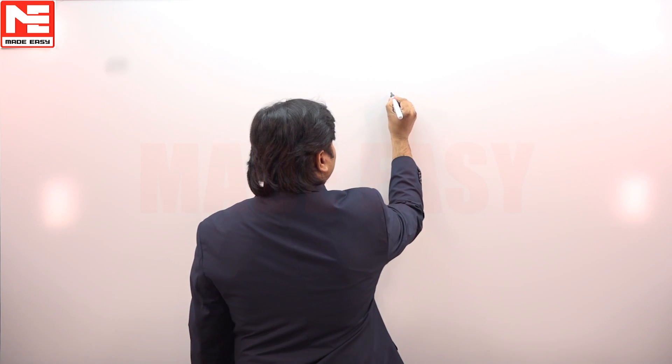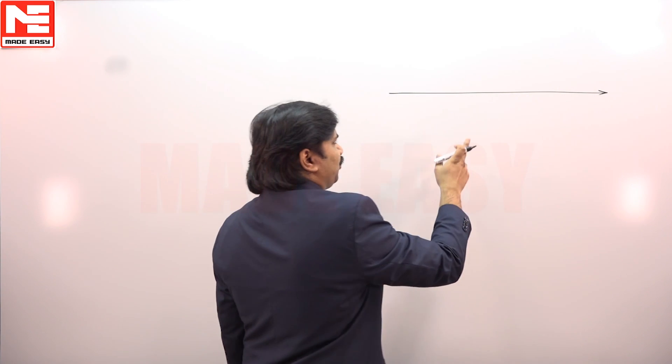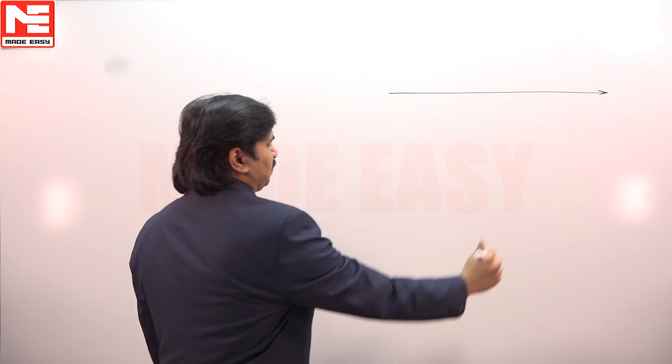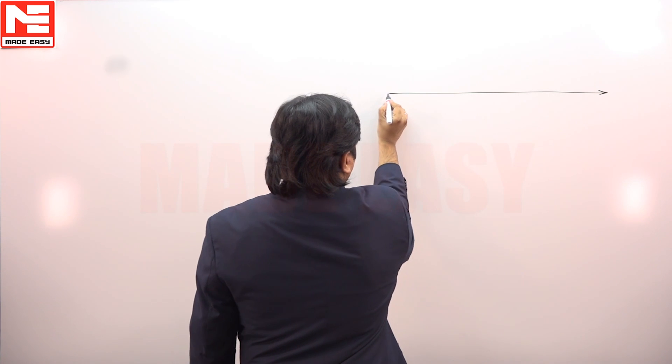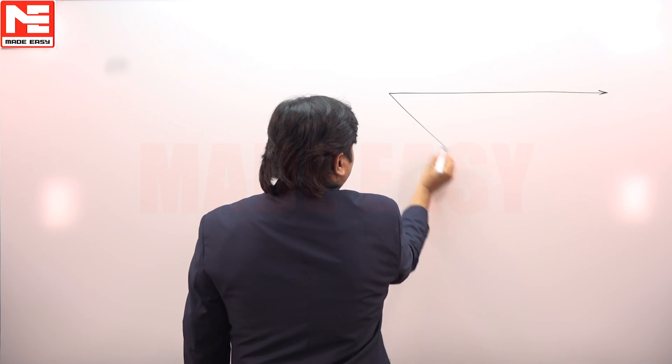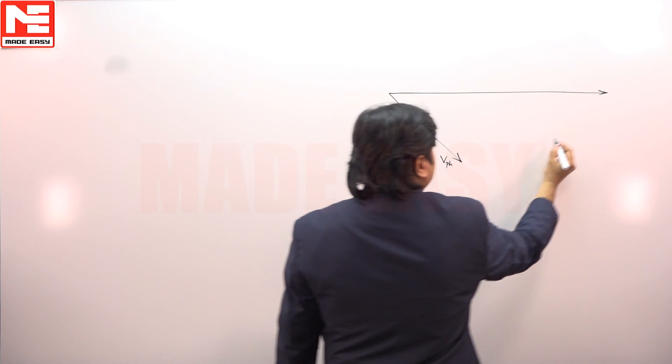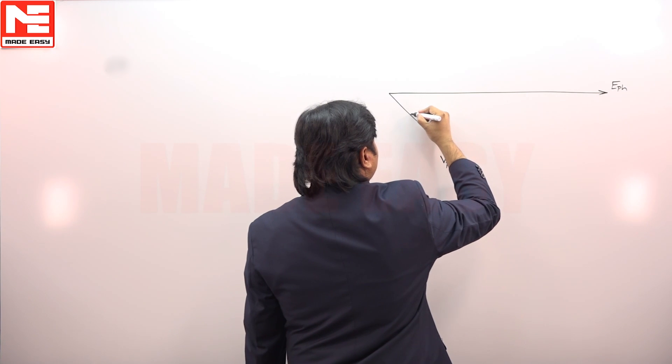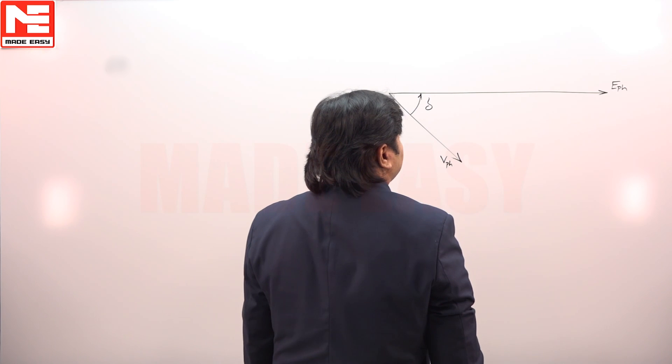First, we develop that. Then once you know the phasor diagram, from that you can calculate any question easily by substituting the values. This is E phase vector and this is V, this is E. The angle between them is delta. In the generator, E leads V.